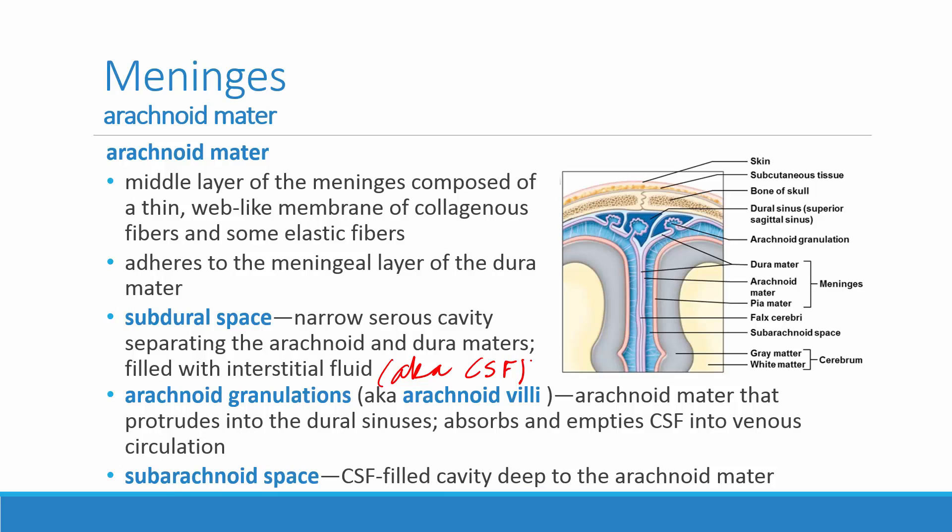The arachnoid granulations, also known as the arachnoid villi, are where the arachnoid mater protrudes up into the dural sinus, and that's where we absorb and empty the cerebrospinal fluid back into the venous circulation.